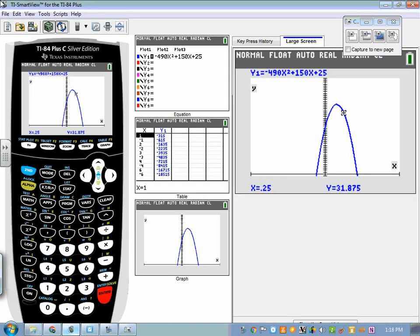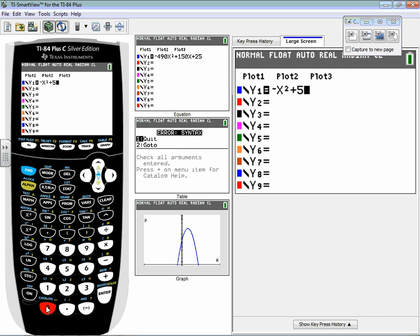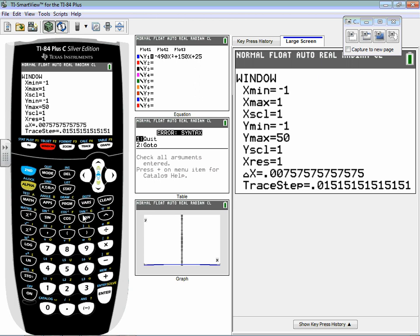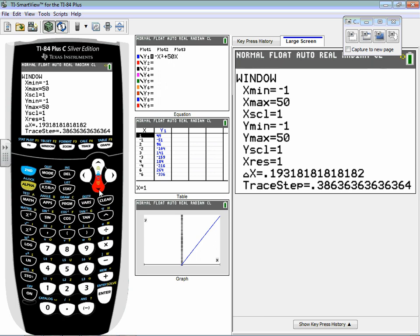Well, my function was negative X squared plus 50X, and then really importantly, we're going to tweak our window settings. It's not the frog anymore. I am going to keep negative 1 for X min and Y min, just so we can see where those axes are, but X max, remember that it can't be larger than 50, so 50 is fine. Y max can't be larger than 50 as well.